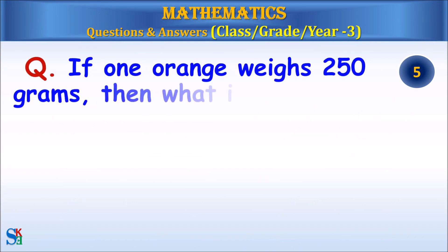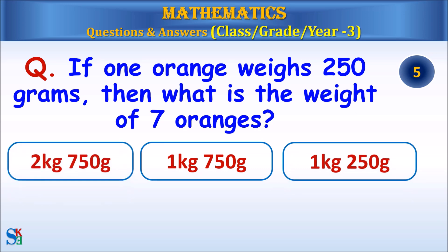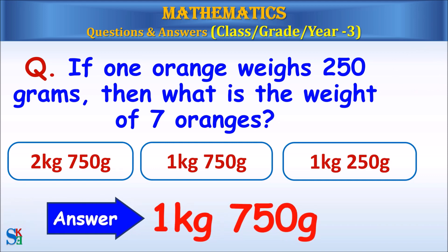If one orange weighs 250 grams, then what is the weight of seven oranges? Answer: 1 kg and 750 grams.